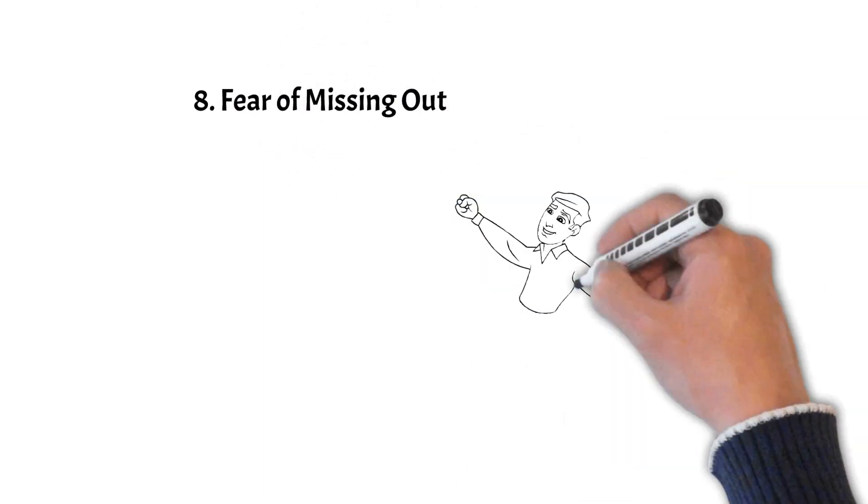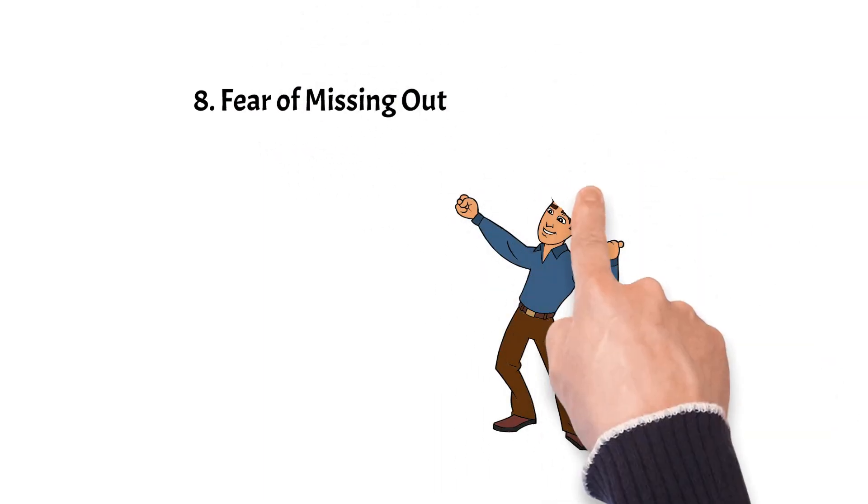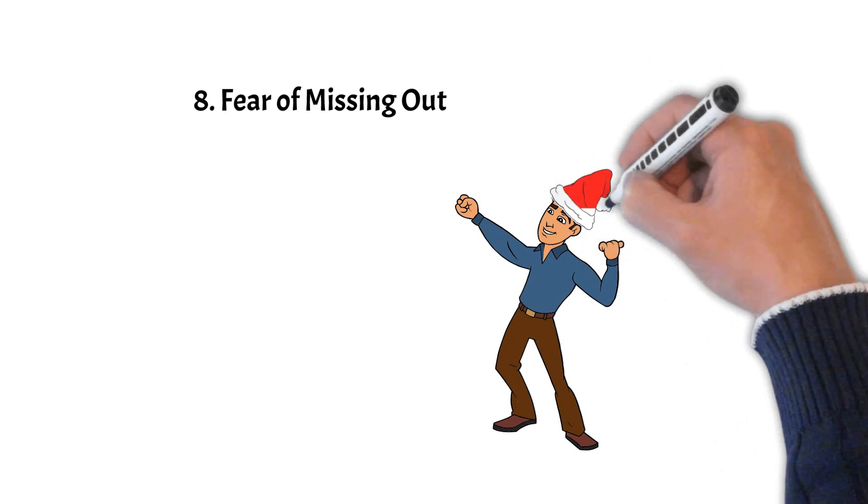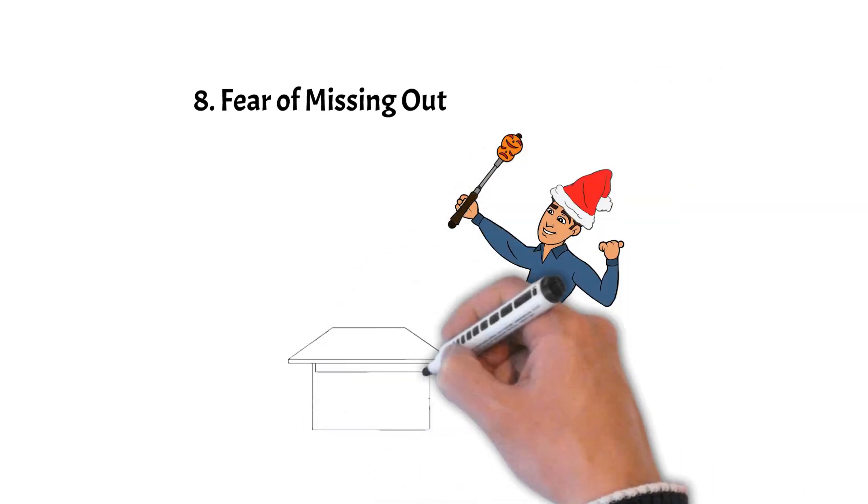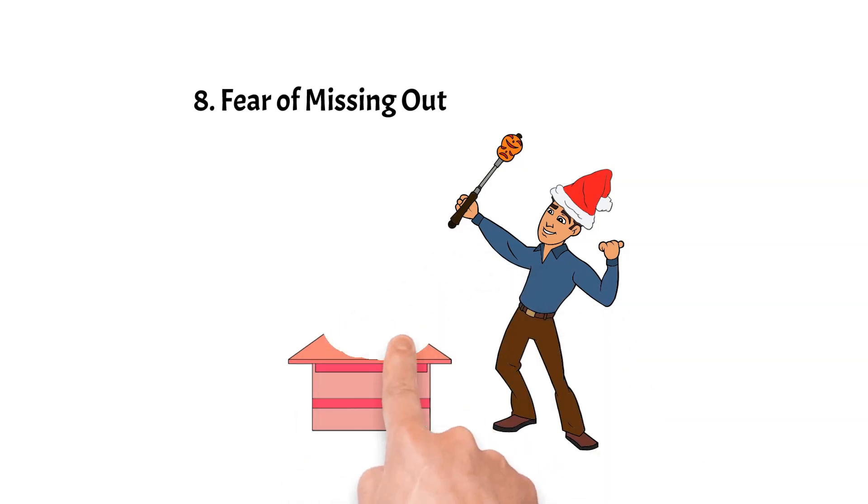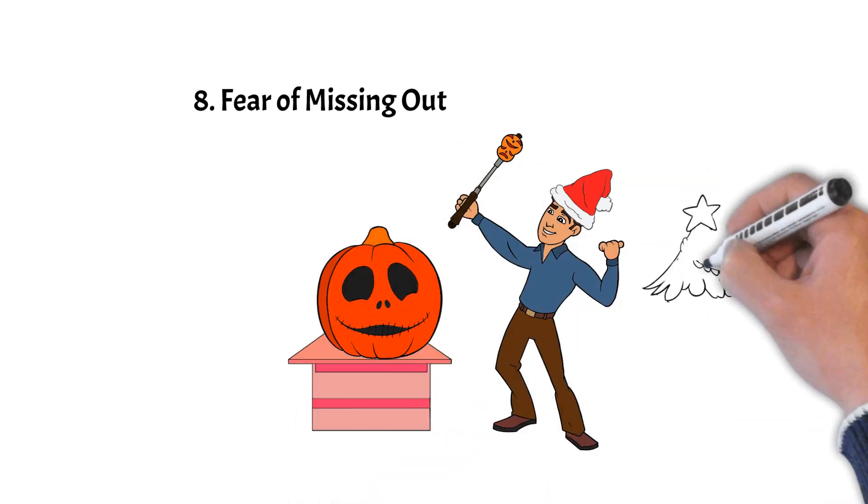8. Fear of Missing Out. This fear of missing out can lead 7s to constantly seek the next best thing, making others sometimes feel left behind, undervalued, or overlooked.